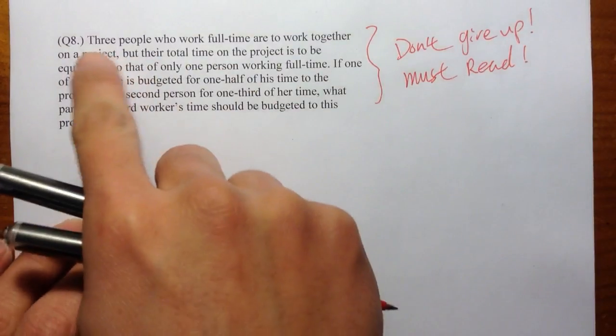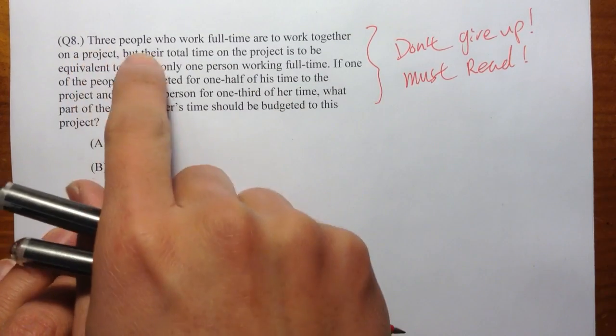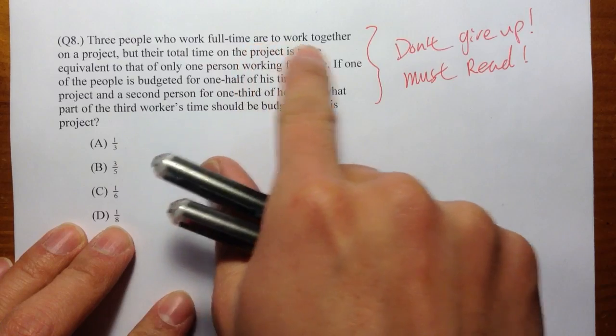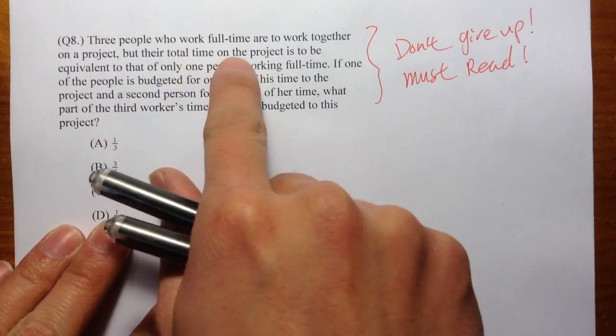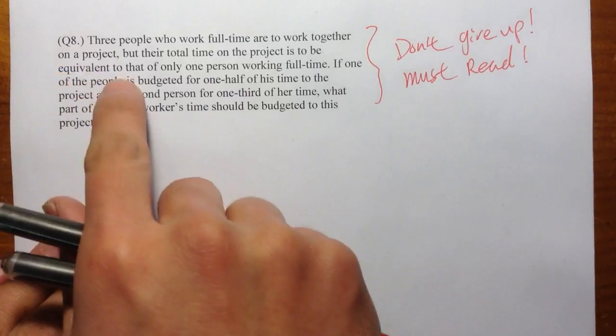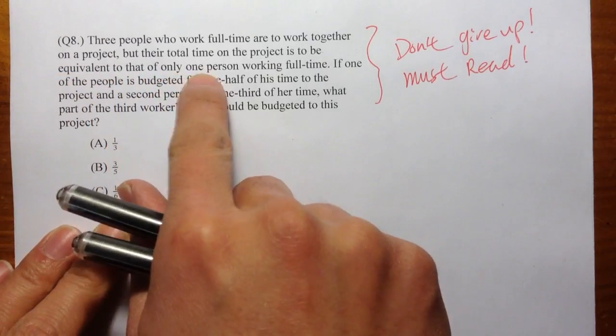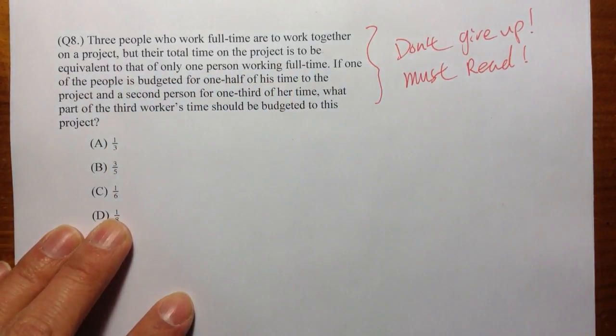So here we go. First, it says that we have three people who work full time. They are going to work together on a project, but their total time on the project is to be equivalent to that of only one person working full time. Let's see what that means.